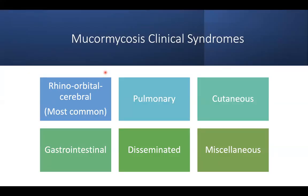The clinical syndromes for mucormycosis include six forms: rhinoorbital cerebral (affecting the nose, eyes, and brain), pulmonary, cutaneous, gastrointestinal, disseminated, and miscellaneous. For examination purposes, memorize rhinoorbital cerebral because it is the most common, comprising about 80 to 90% of cases.